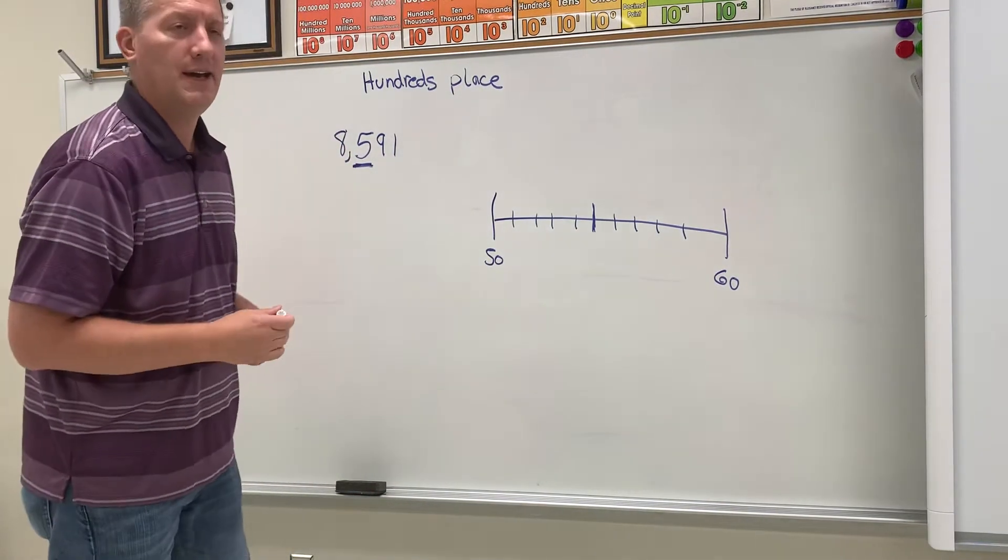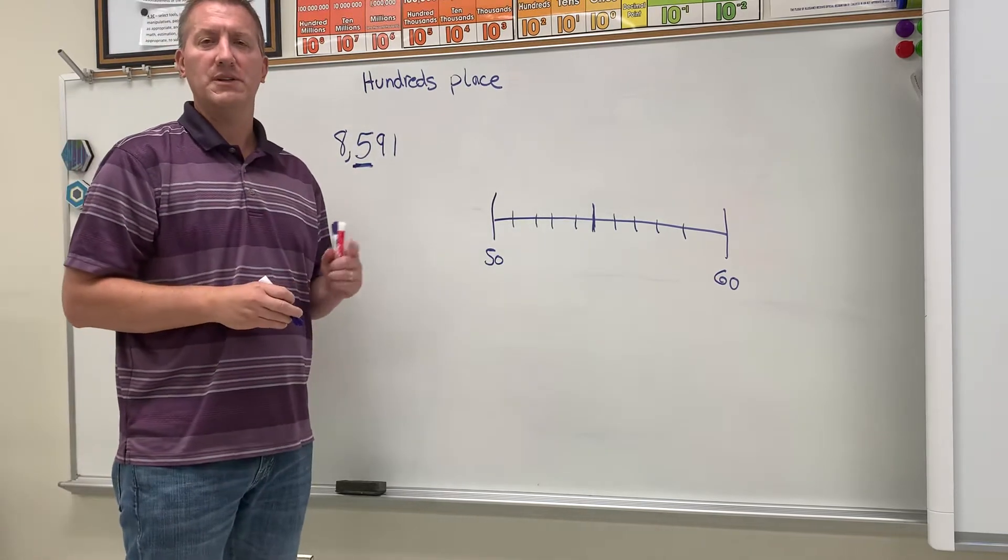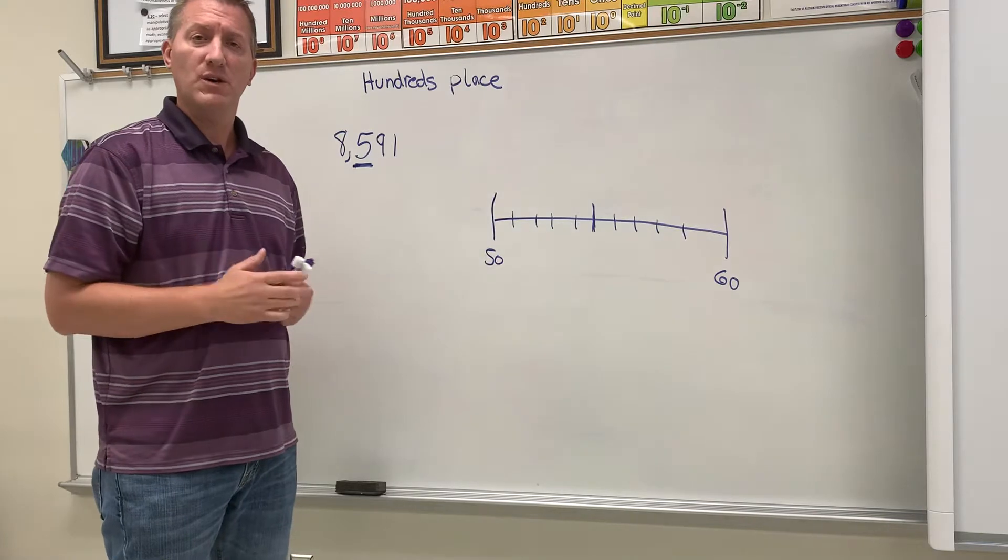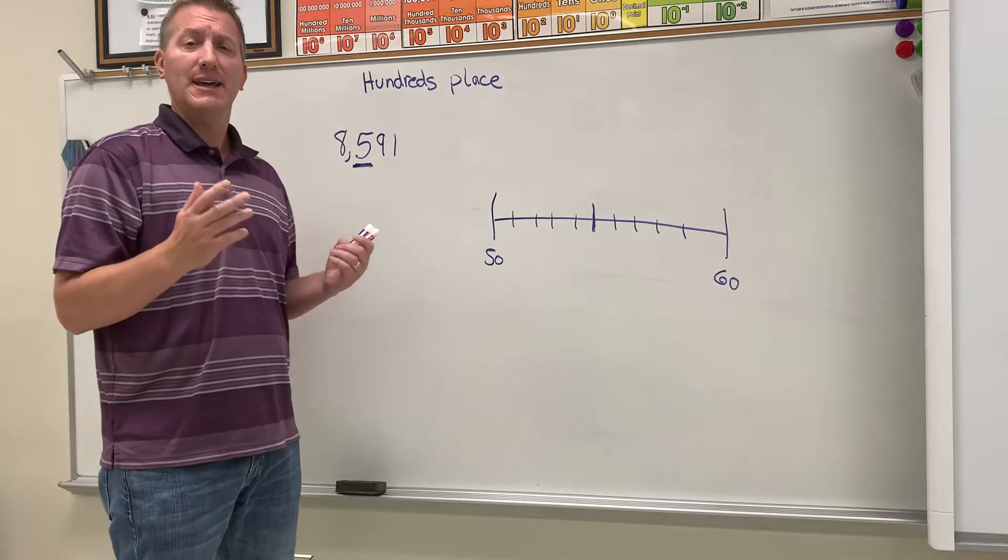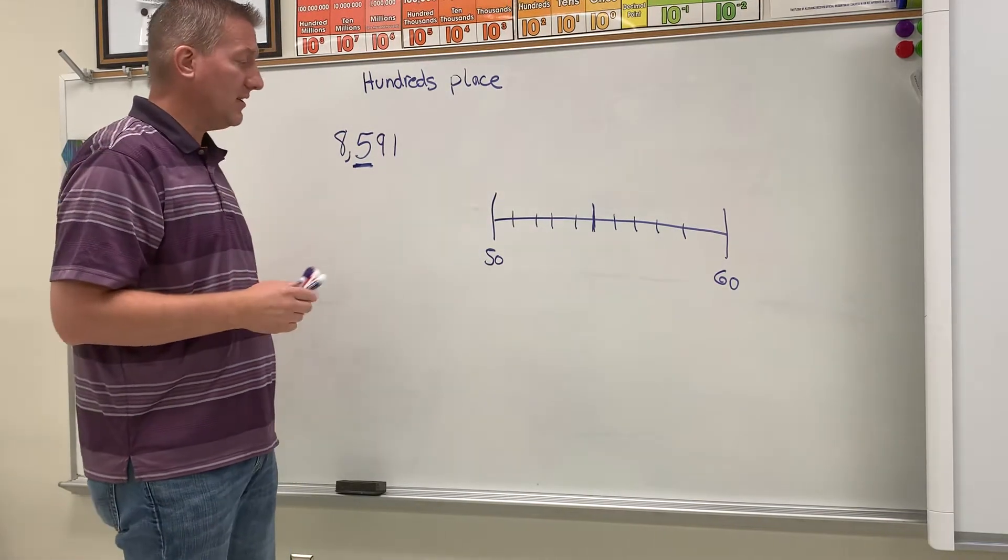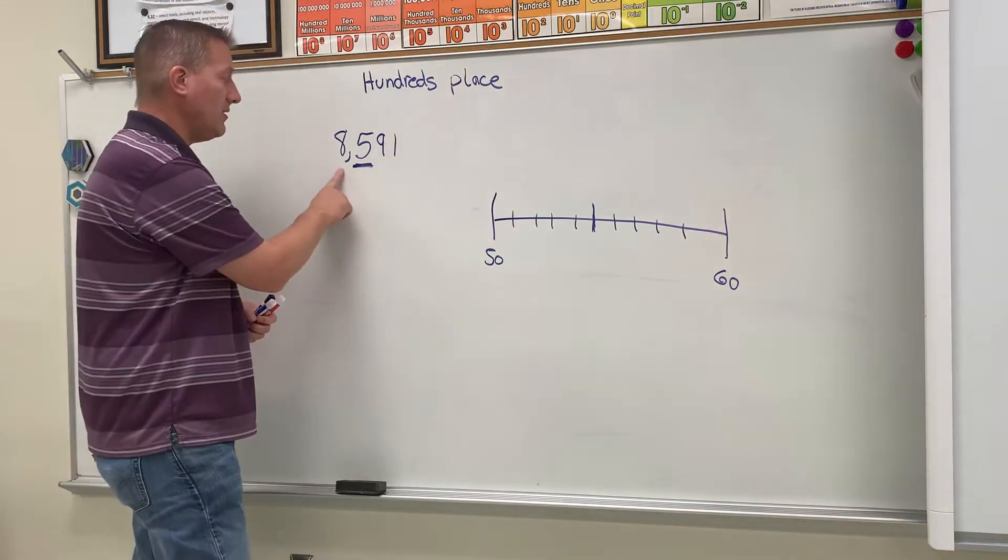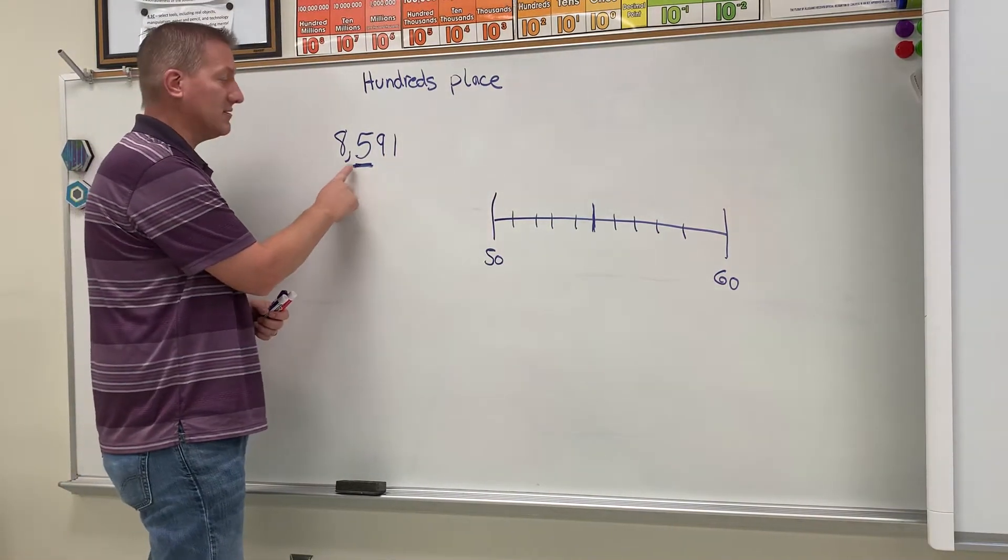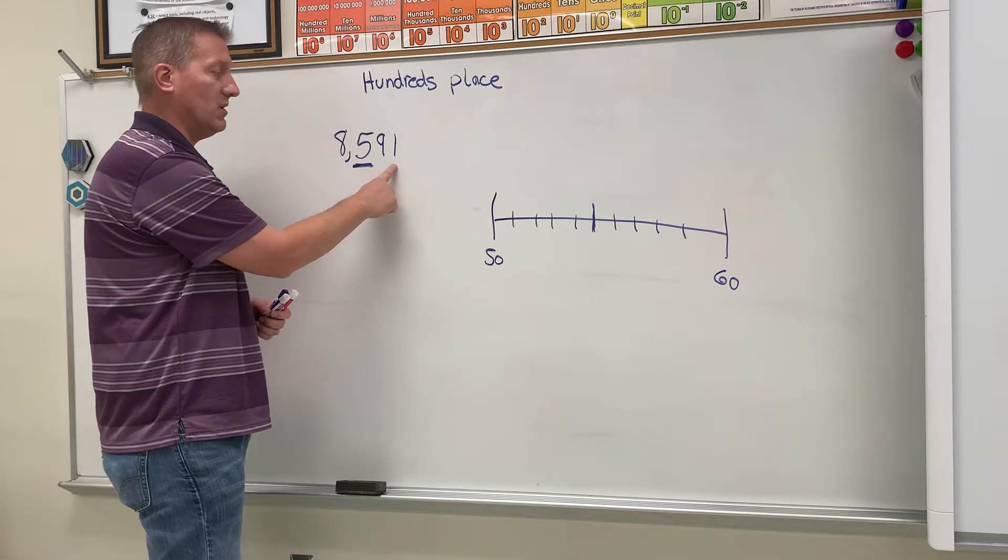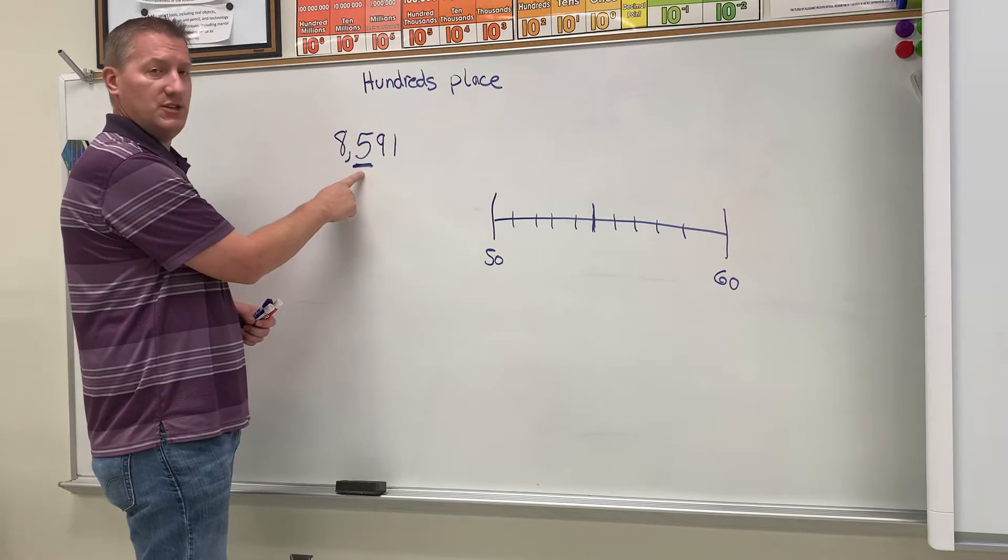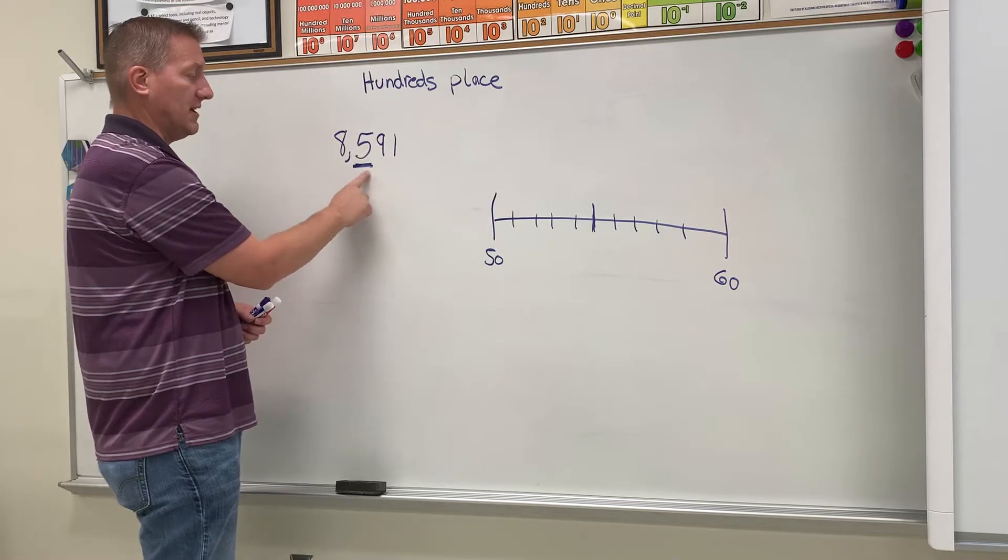Hey class, yesterday I taught you a couple different ways to round a number, and those might have worked for you. If they didn't, here's another way that you can round a number. Say you have a number of 8,591, and you're rounding it to the hundreds place. Notice that the hundreds place is underlined.